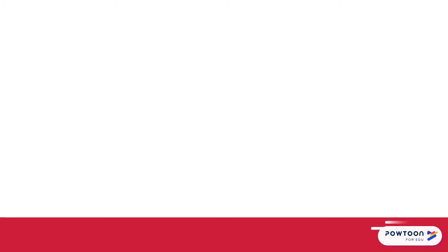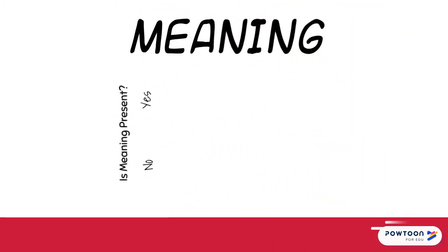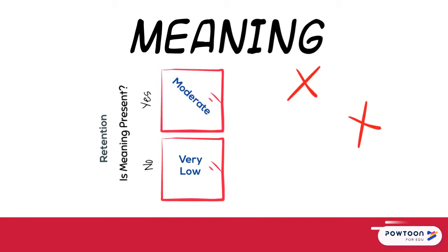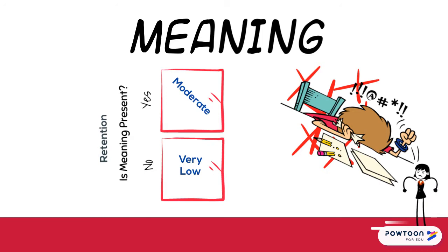Things that mean something but do not make sense also have a lower chance of long-term storage. For example, the threat of a poor grade on a spelling test means something to a grade 6 student. He or she can do well at memorizing the spelling regardless of understanding or making sense of the words.